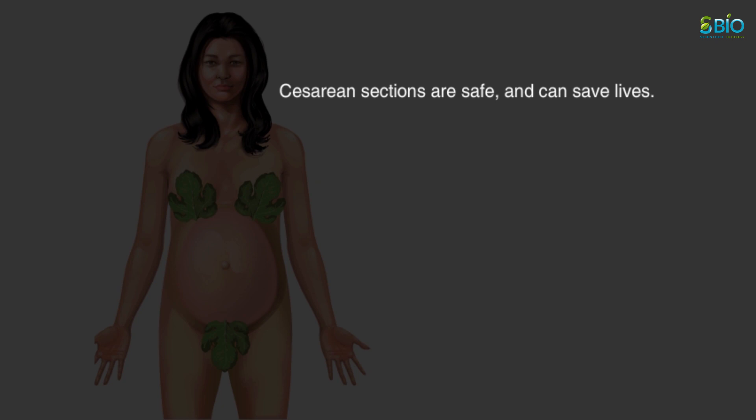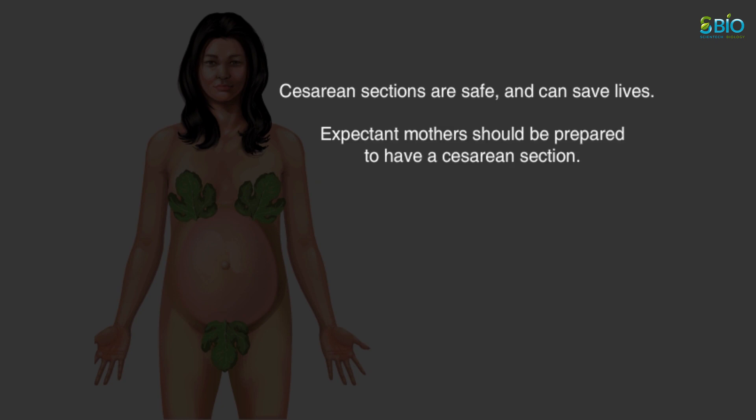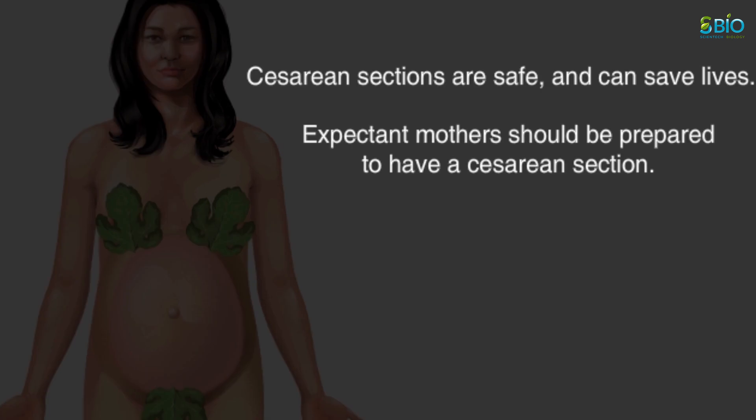Caesarean sections are safe and can even save the life of both mother and baby during emergency deliveries. Expectant mothers should be prepared for the possibility of having one. Keep in mind that in childbirth, it is not only the delivery method that matters, but the end result — a healthy mother and a healthy baby.